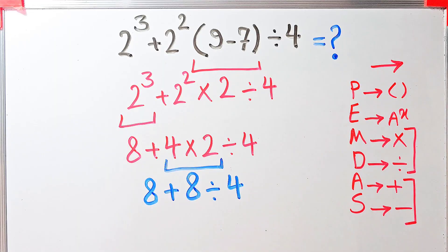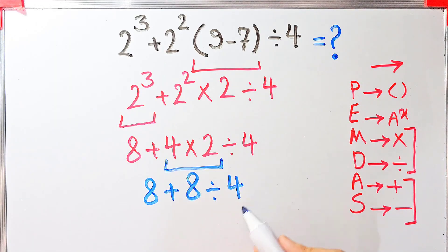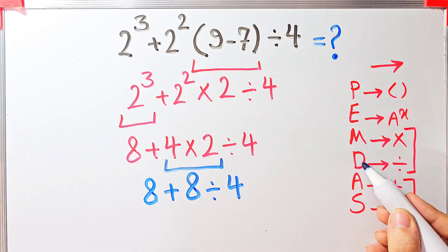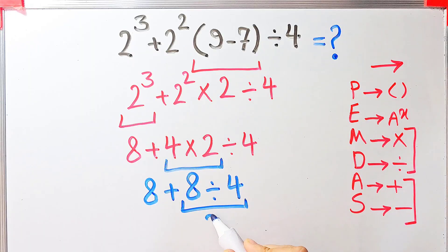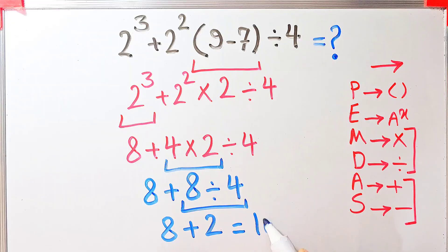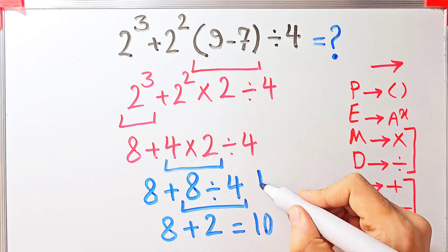In this step we have addition and division. We simplify division first because it has higher priority than addition. 8 divided by 4 equals 2. Now we have 8 plus 2, and the final answer of this question equals 10. Thanks for watching — please subscribe to the channel and leave a comment. Goodbye!